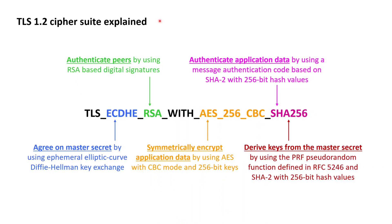Going from left to right across the TLS 1.2 cipher suite, reading TLS_ECDHE_RSA_WITH_AES_256_CBC_SHA256, we can see that the first part following the generic prefix TLS reads ECDHE. ECDHE is the ephemeral elliptic curve Diffie-Hellman key exchange we discussed in the essentials of cryptography chapter, and such a key exchange serves the purpose of the client and the server agreeing on a master secret.